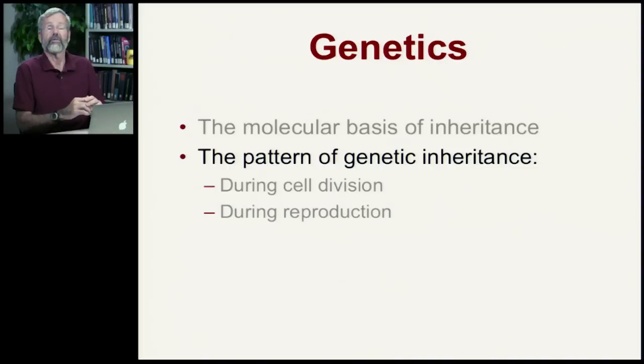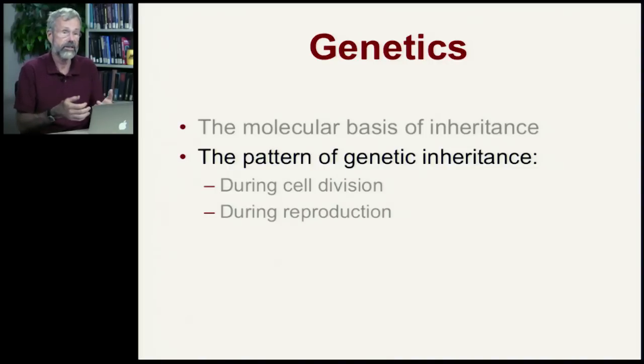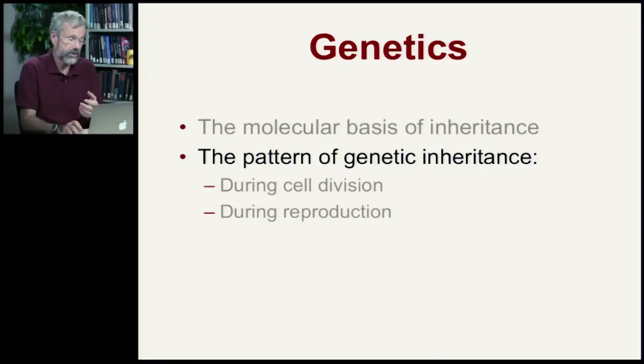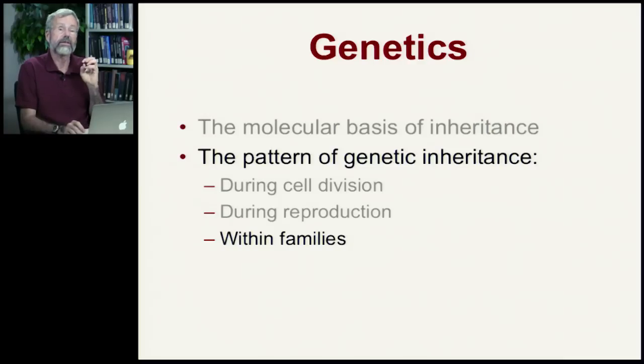Today we're going to go back in time to look at the foundation of modern genetics — Mendelian genetics. So far we've seen how DNA self-replicates, is transcribed and translated to produce proteins, and we looked at the pattern of inheritance during cell division in mitosis and in the formation of gametes in meiosis. Today we're going to look at how genetics are inherited within families.